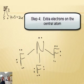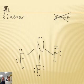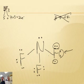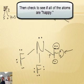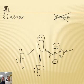But we have 26, we have two more and those go on the central one. Now if you really can count, everyone's got eight. Look at this fluorine: two, four, six, and the bond counts as two more, eight.